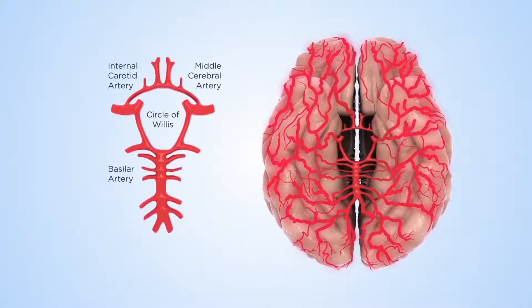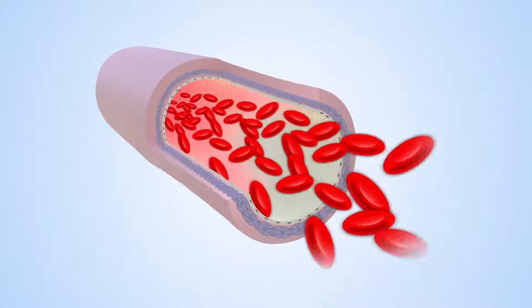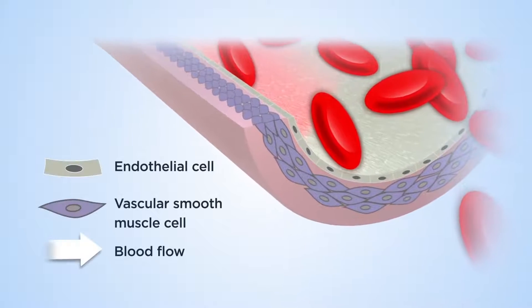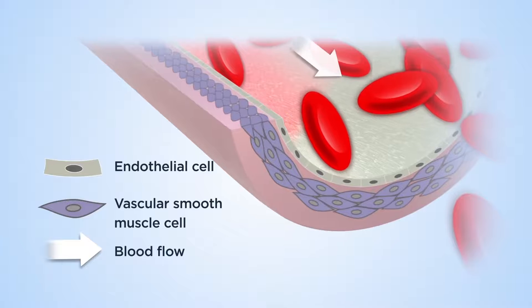A research team led by David Harder at the Medical College of Wisconsin is focused on understanding more about mechanisms of blood flow autoregulation in the brain. For blood flow to remain constant, the brain relies on specialized vascular muscle cells in the blood vessels to react to changes in pressure.